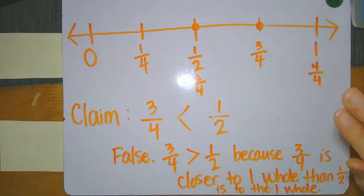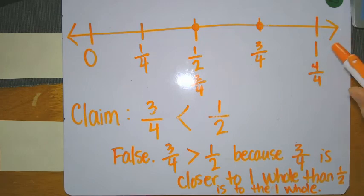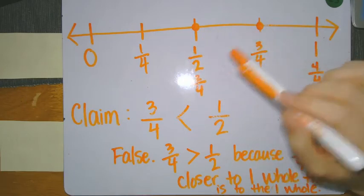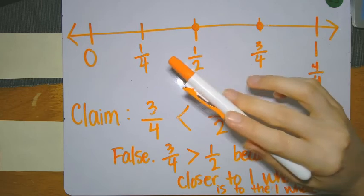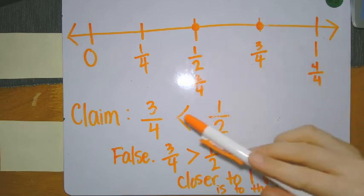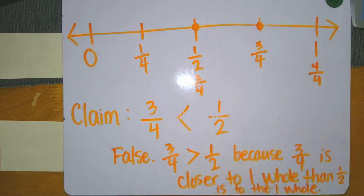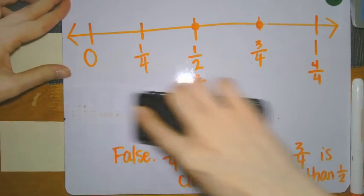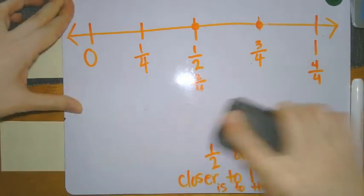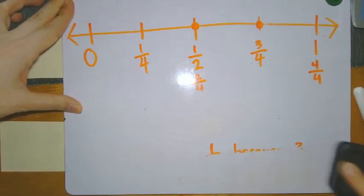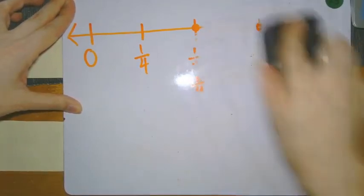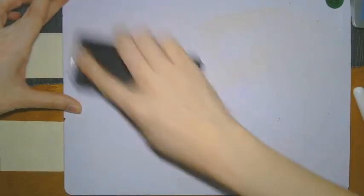That is a pretty short lesson today. I just want you to focus on making the number line, plotting your fractions to make your claim. Include all of those fractions for halves and fourths. Make that claim and support it with a sentence or a picture or an alternative way that you can share your thinking. I'm going to give you one problem to work on, and we're going to start on that tomorrow at the beginning of our video to see how you did.